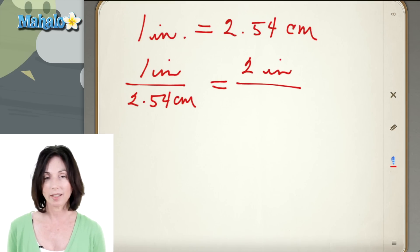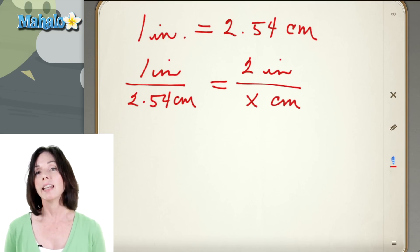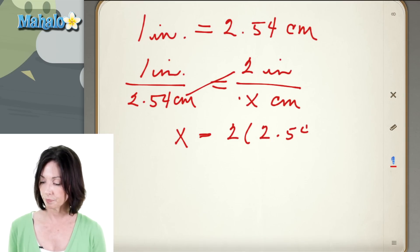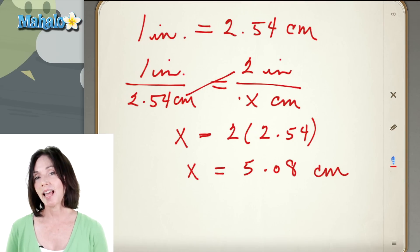And I want to convert it into centimeters. I don't know how many centimeters that is yet. That's what I'm going to figure out. So we have x centimeters on the bottom. Now you can just cross multiply to figure this out. 1 times x is just x and then we cross multiply this way and we get 2 times 2.54. And 2 times 2.54 is 5.08. So 2 inches is the same as 5.08 centimeters.